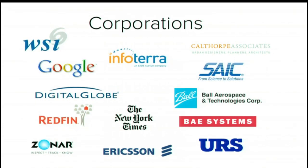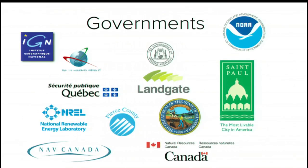Corporate users including the Weather Network, WSI, Google, and InfoTerra. The New York Times uses PostGIS underneath their mapping sites. Government users — IGN was one of the first really big government organizations, the French National Mapping Agency — but now we've got state and local as well: Quebec, the city of St. Paul, NOAA in the US federal government. So big and small, corporate and government, lots of folks are using PostGIS these days.